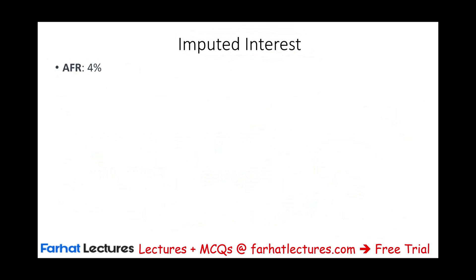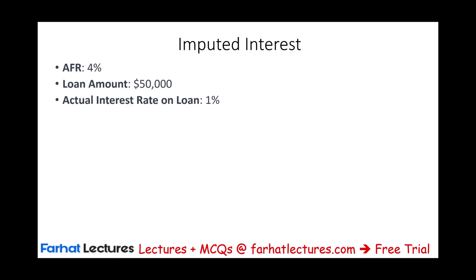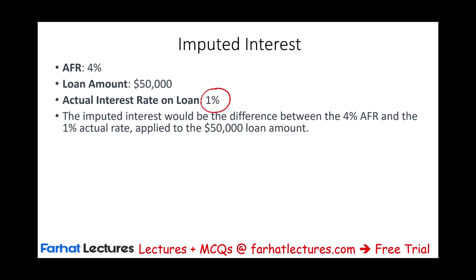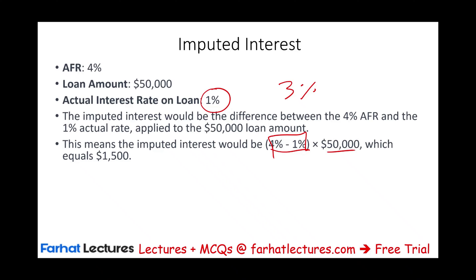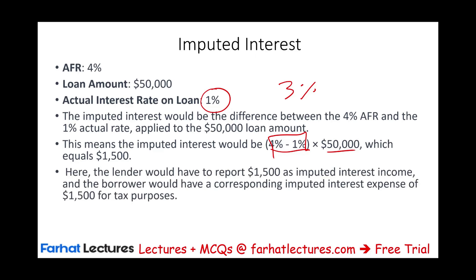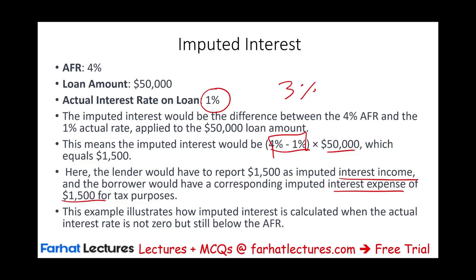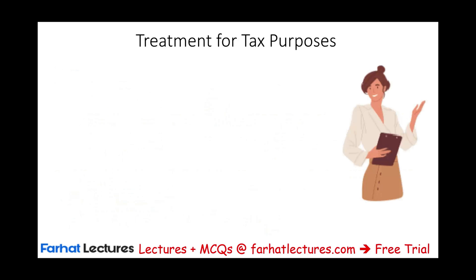Let's look at an imputed interest computation. Assume the AFR is 4%, the loan amount is $50,000, and the actual interest rate between the two parties is 1%. The imputed interest will be the difference between 4% and 1%, which is 3%. So imputed interest equals 3% × $50,000 = $1,500 per year. The lender would report imputed interest income of $1,500, and the borrower would report an imputed interest expense of $1,500 for tax purposes.